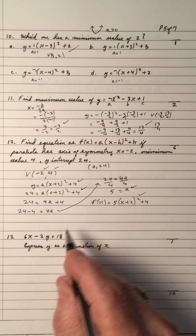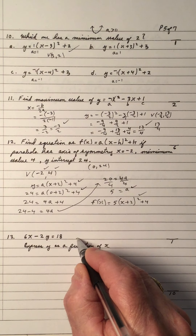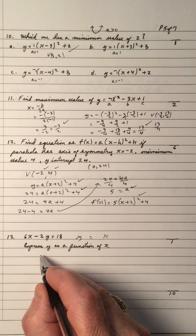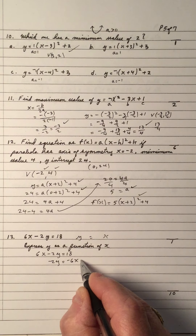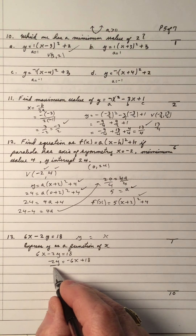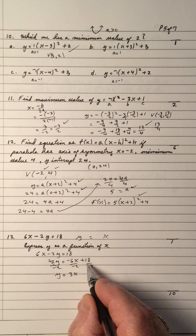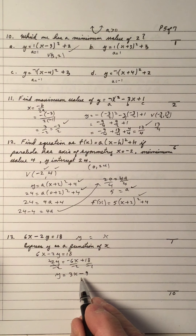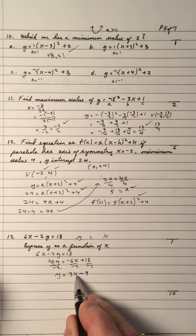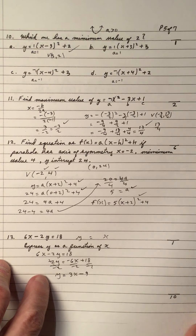Number 13: given 6x minus 2y equals 8, express y as a function of x. Solve for y: move 6x to the right to get negative 2y equals negative 6x plus 8. Divide by negative 2 to get y equals 3x minus 4. Give yourself a mark. Now y is in terms of x — x is the independent variable (input), y is the dependent variable (output).